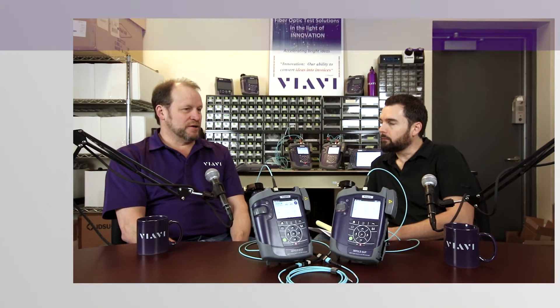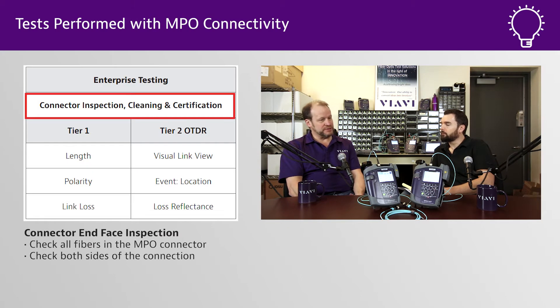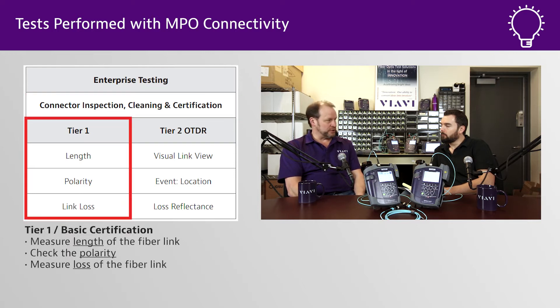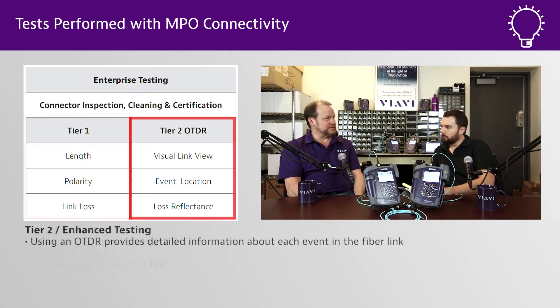When it comes to MPO testing, a lot of folks who are getting into this are asking, what kind of test equipment do I need for MPO? MPO testing is not that much different than regular duplex fiber testing in the sense of what tests need to be performed. You've got your straight-on inspection of the fiber end faces — typically a 12-fiber ferrule — your Tier 1 or basic certification (loss, length, and polarity), and your Tier 2 or enhanced testing, which is performing OTDR tests so you can see each individual event in that fiber link. That's really the same as duplex testing; it's just that your tools have to be different because you've got that MPO connector.